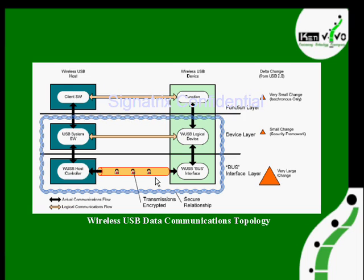Here we have the physical medium. On the device side, we have the W-USB bus interface at the bottom — this is the lower level layer. Above this we have the wireless USB logical device, known as the device layer. Above that, the layer at the top of the device side is the function layer. So totally we can divide this entire USB system into three layers: function layer, device layer, and bus interface layer.